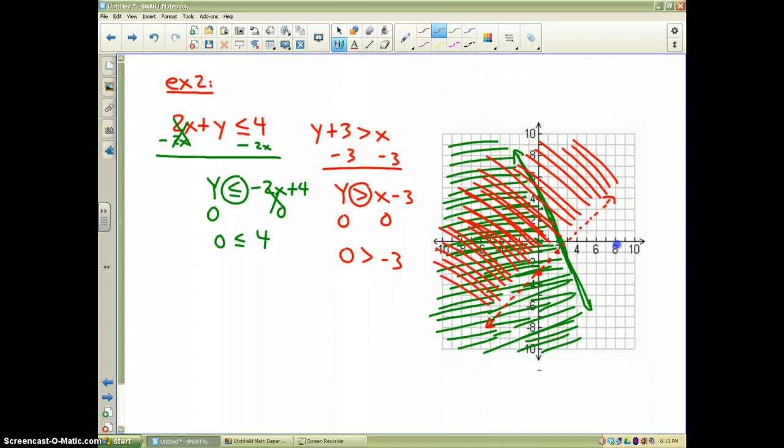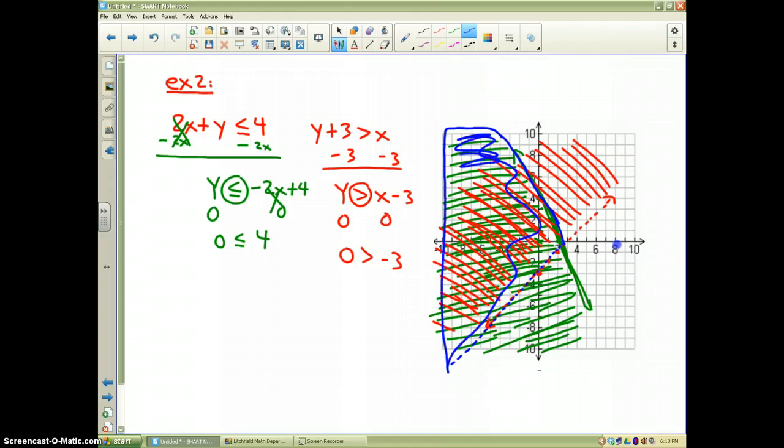Therefore, the final answer to this problem is the area where the shadings overlap. Well, that would be from this line, this solid line right there, to where they intersect, which is this dotted area here. And everything in between. So all this area in blue would be my final answer because that is where the shadings intersect.